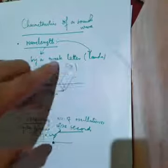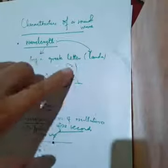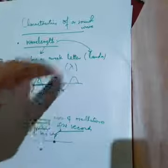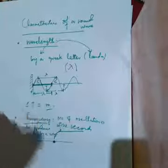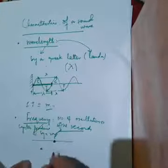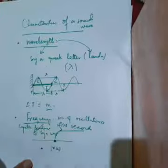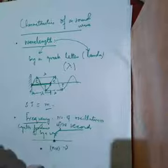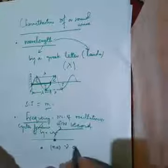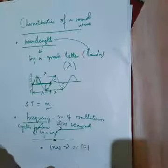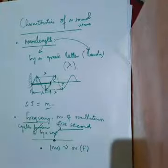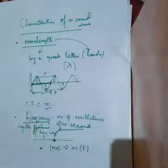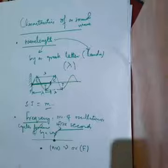We represent wavelength with the Greek letter lambda (λ). Similarly, we represent frequency with the Greek letter nu (ν) — that is n-u, not mu. The number of oscillations or the number of cycles produced in one second is the frequency.